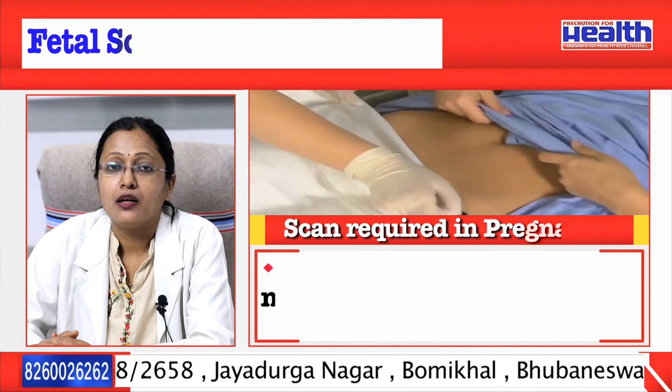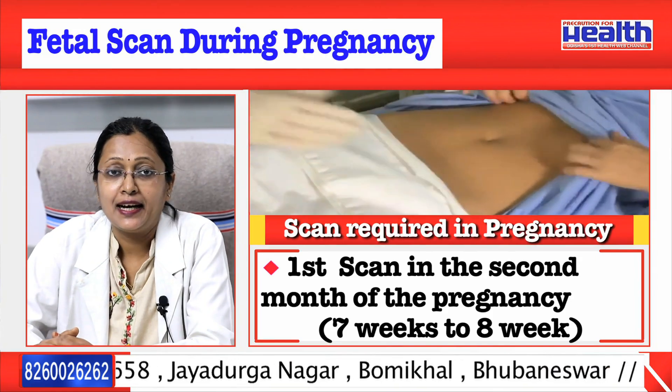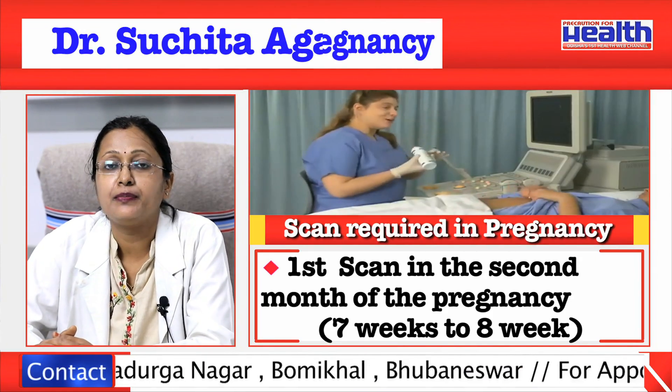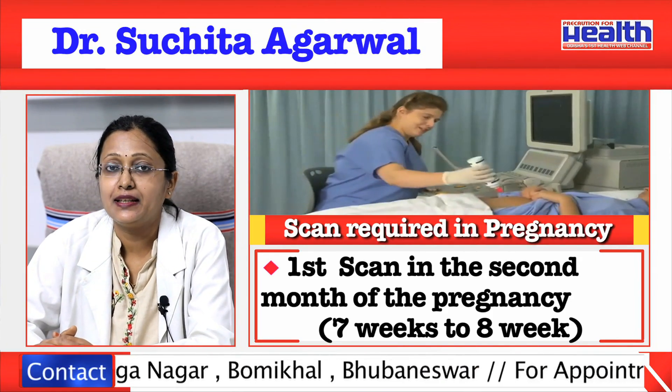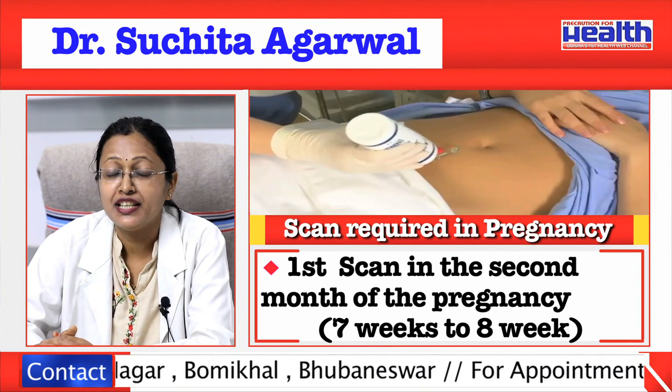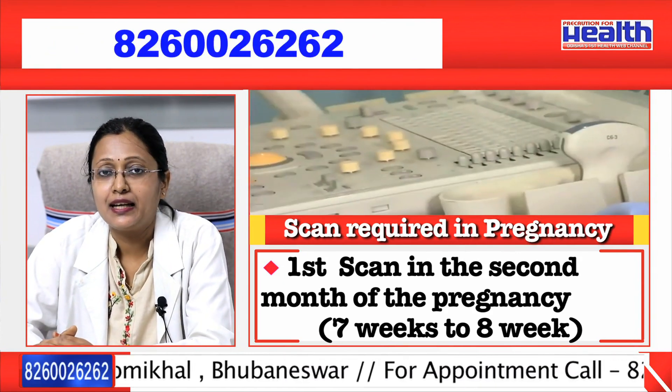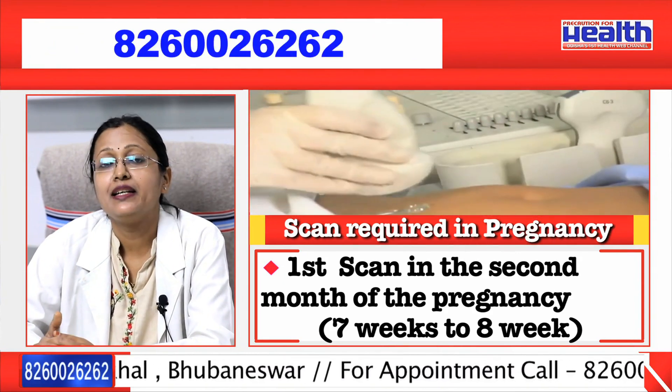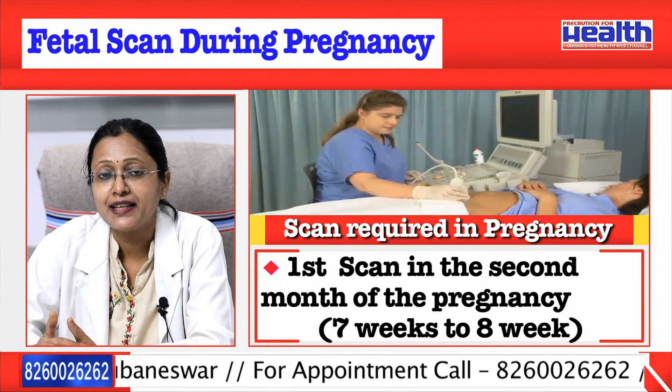How many scans are required in a low-risk pregnancy? In a low-risk pregnancy, a minimum of four obstetric scans are required. The first scan is to be done in the second month of pregnancy, that is around seven to eight weeks. This scan is known as a dating scan.